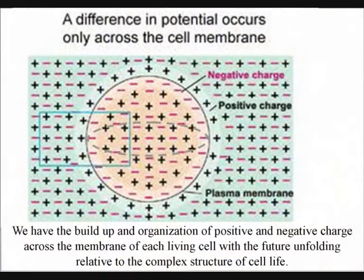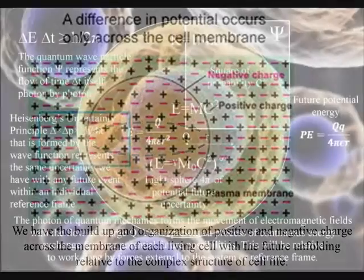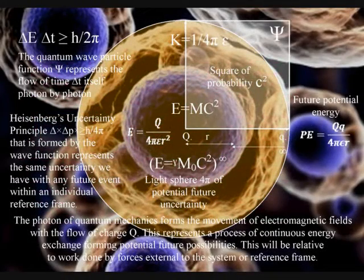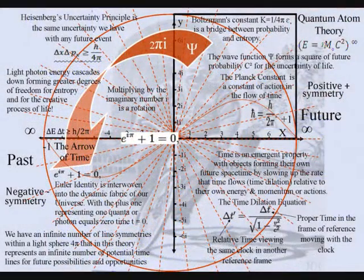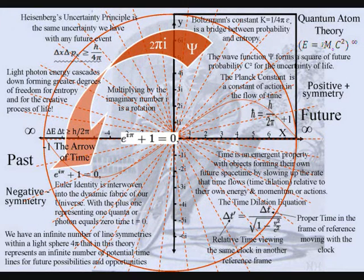In the evolving block universe, the past always exists, but in this theory, only the moment of now exists, relative to each object or life form, within the ever-changing world of our everyday life, that is maintained by the continuous exchange of photon energy.